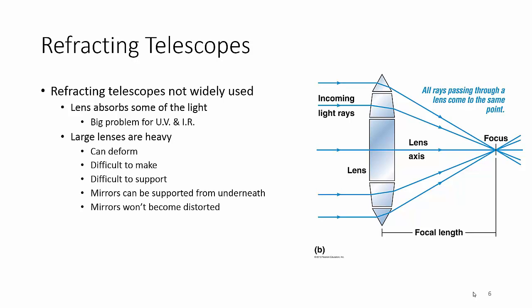The lenses are really heavy. The bigger the telescope, the bigger area you can focus, the better your image. So you need a big lens, right? Well, they're heavy, they can deform just like glass deforms. Lenses will deform, they're difficult to make, difficult to support.